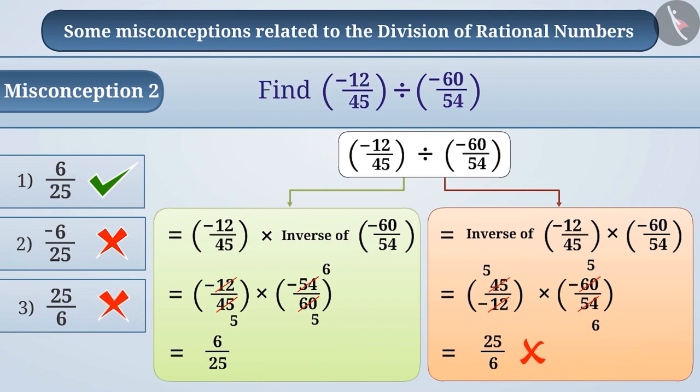As you can see, from the first method, we get 6/25 as the result, while the second method gives us 25/6. Since both methods do not yield the same result, the two methods are not the same. So, keep in mind that while dividing, keep the first number as it is and multiply it by the inverse of the second number.